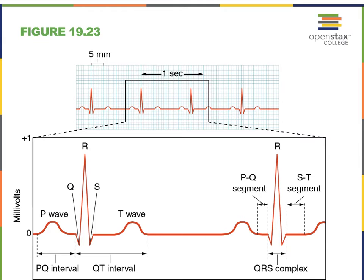Here we see an EKG of a healthy individual with the deflection waves. Notice that they keep repeating over and over again, just like our heartbeat keeps occurring and reoccurring. An EKG is not showing your heartbeat — it's showing the electrical activities, which then lead to heartbeats.